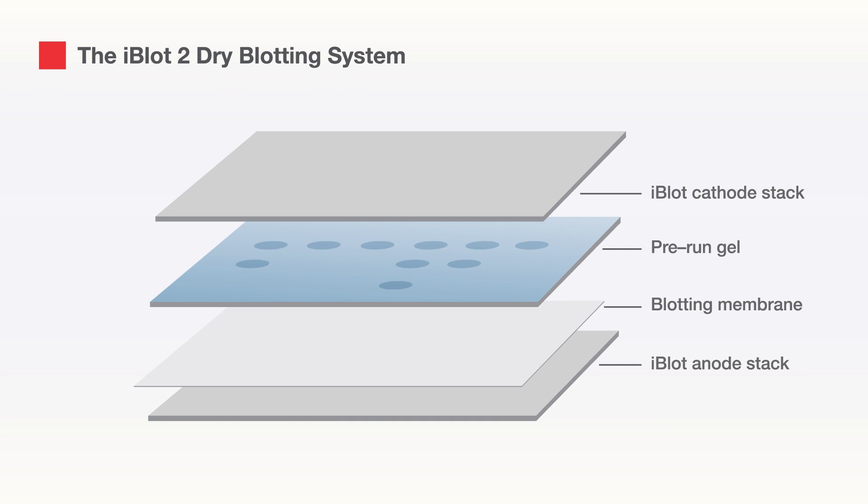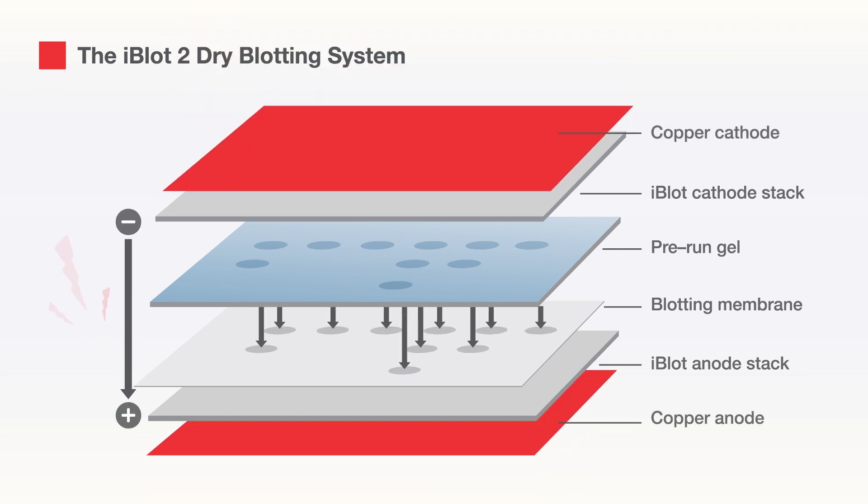iBlot2 stacks consist of a copper cathode and anode, sandwiching dry gel matrices containing the appropriate buffers, so there is no need to prepare transfer buffer.